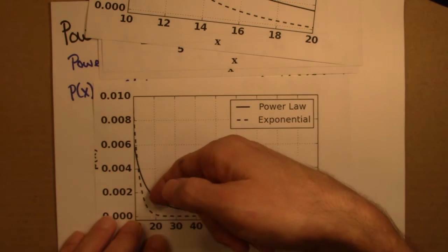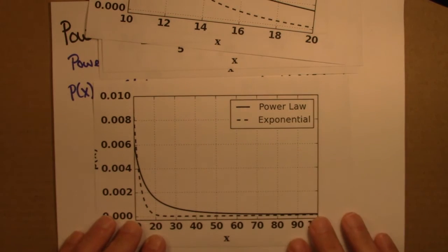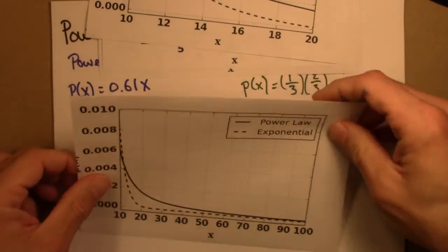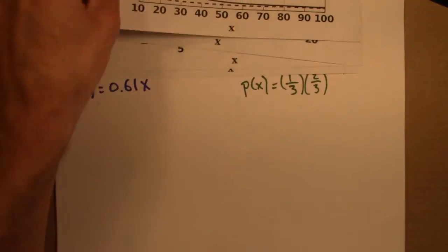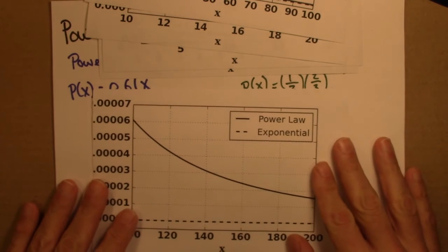So this tail, the tail of the distribution, is very long. It takes a long time for it to get closer to 0. And we can see that even more dramatically, if instead of going from 10 to 100, I go from 100 to 200. So if I do that, here we can really see the long tail of the power law.